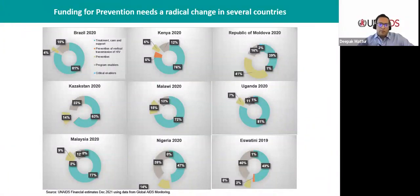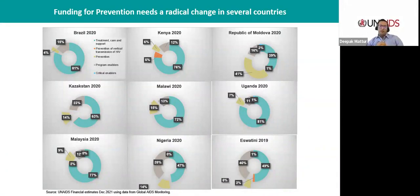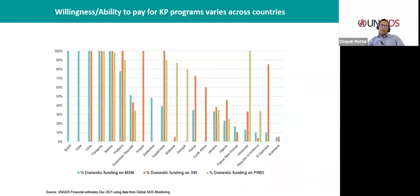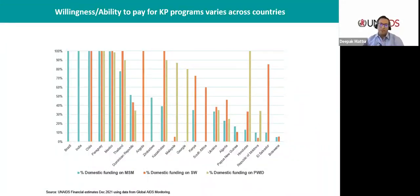The funding for key population prevention and the share of prevention spending overall is not matching the resource needs in several countries. Some countries expected to increase their prevention spending share in double digits report less than 10% of total spending on prevention services — sometimes even less than 5% allocated to key population services. The willingness to pay from domestic sources for key population services varies across countries: while some fund key population services more than 90% through domestic resources, others are mostly reliant on external funding. Local laws and cultural barriers must be addressed to sustain funding for key population programs.